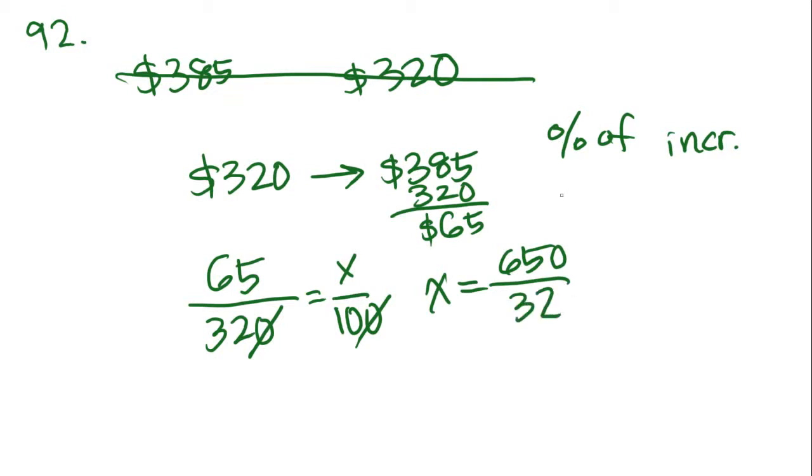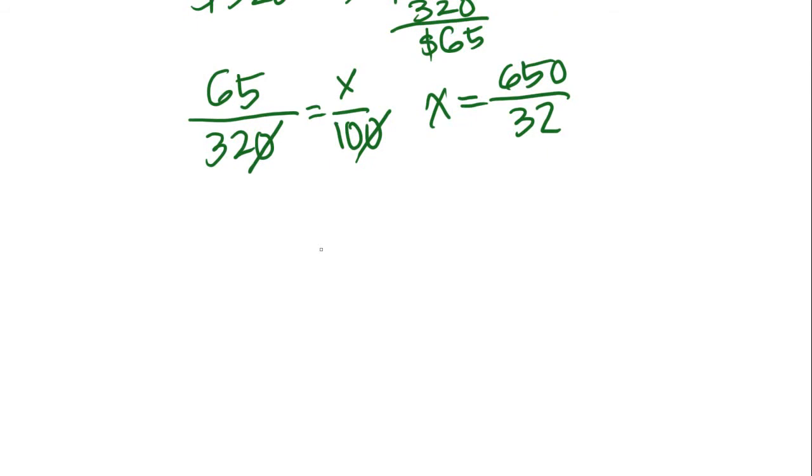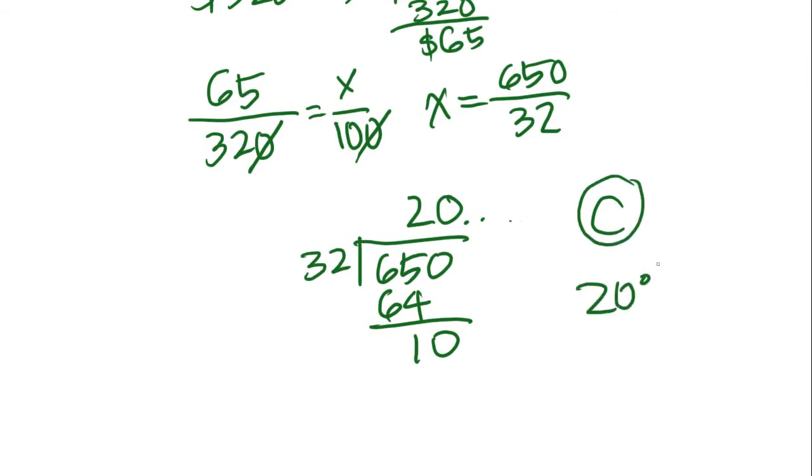So far so good. If we actually then do the division, what ends up happening is we get 32 over 650, two times zero point something something something. The question says approximately what was the percentage increase? And if you look on the answer choices, they give you 2%, 17%, 20%, 65%, so the only one that's close to whatever this decimal would actually be is answer choice C, which is 20%.